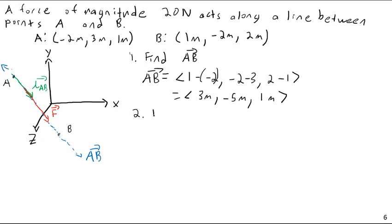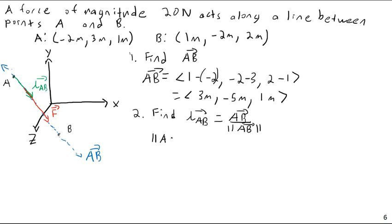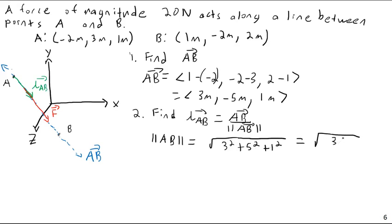Now we need lambda AB, the unit vector of line AB. This is going to be equal to AB divided by the magnitude of AB. To do this, I first need to get the magnitude of AB, which is just the square root of the sum of the squares. So this is the square root of 3² plus 5² plus 1², which is the square root of 9 plus 25 plus 1 — that's the square root of 35.